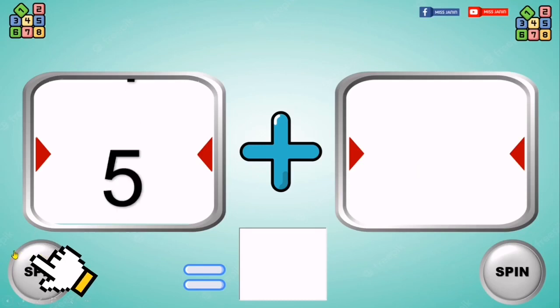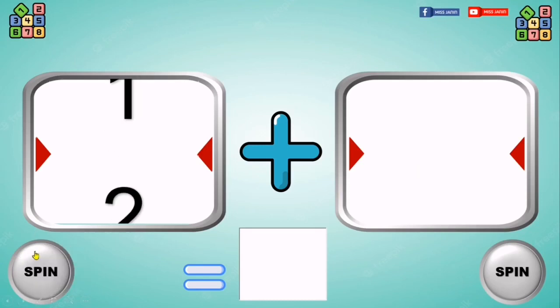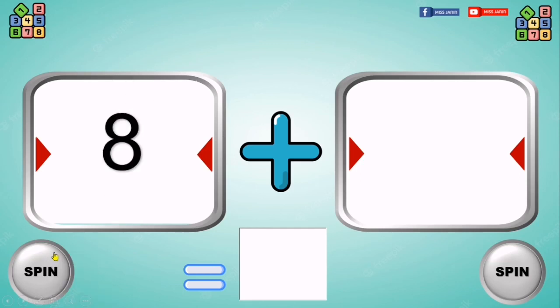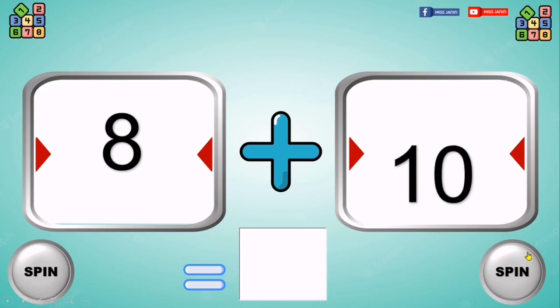Addition. Click spin, then click spin again to pause. Repeat the procedure, then type the answer in the box.